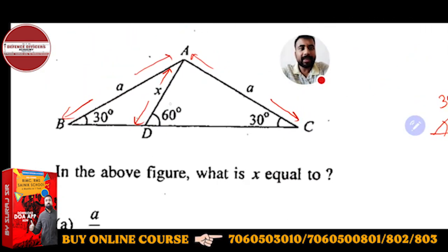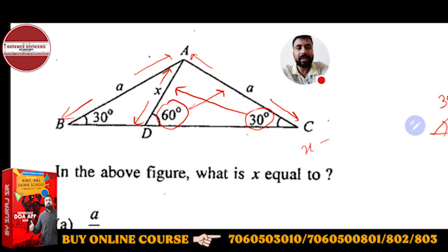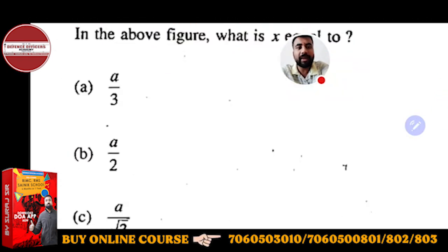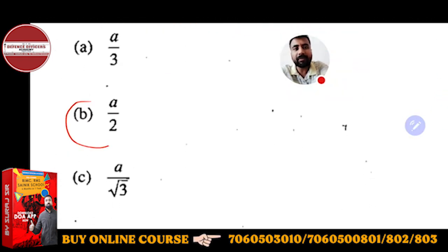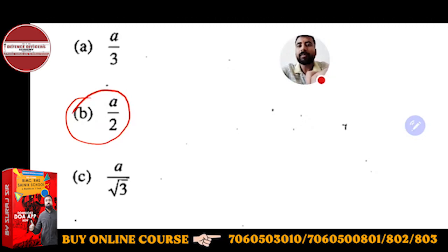If with respect to 60 degree the side is a, then with respect to 30 degree the side will be a by 2. So the value of x will be nothing but a by 2. Very easy, no more calculation, only a basic funda is required.